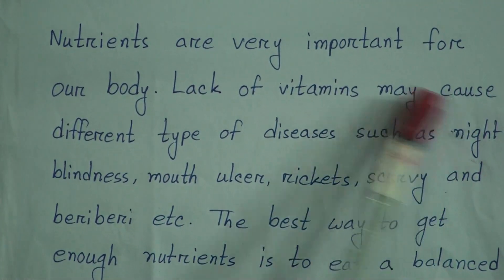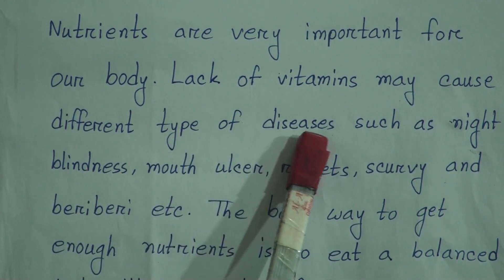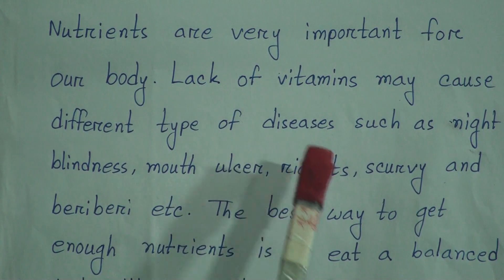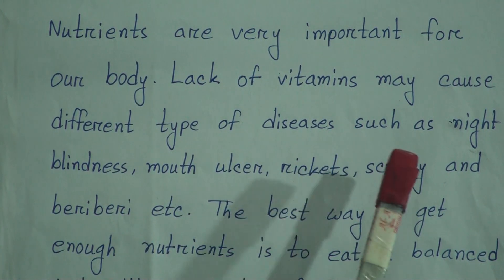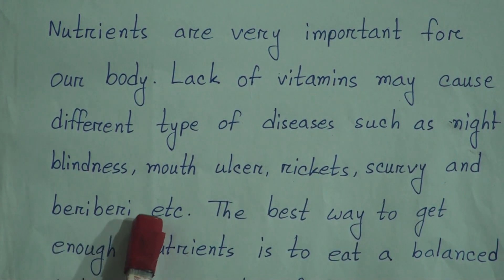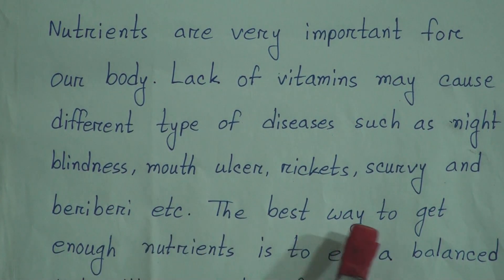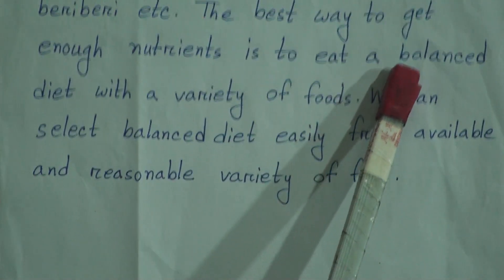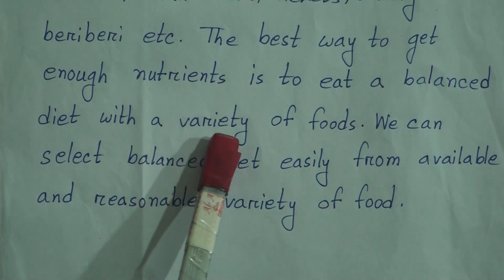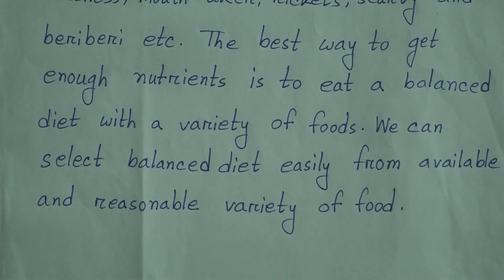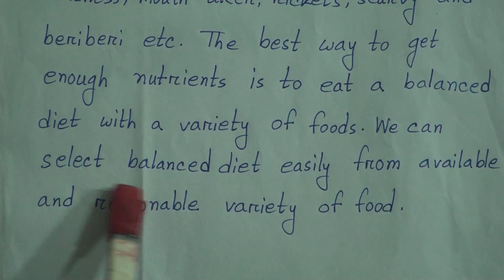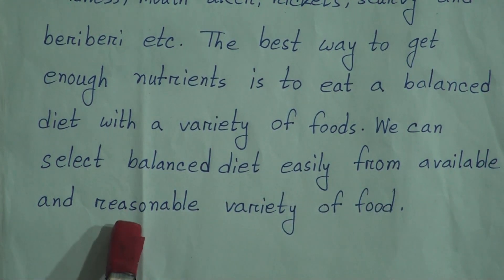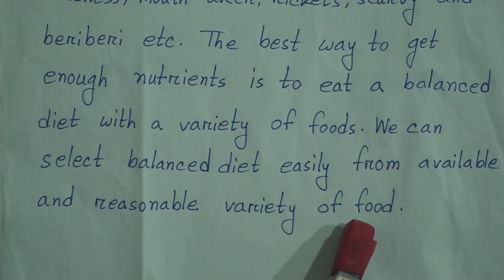Nutrients are very important for our body. Lack of vitamins may cause different types of diseases such as night blindness, mouth ulcer, rickets, scurvy, etc. The best way to get enough nutrients is to eat a balanced diet with a variety of foods. We can select a balanced diet easily from available and reasonable variety of foods.